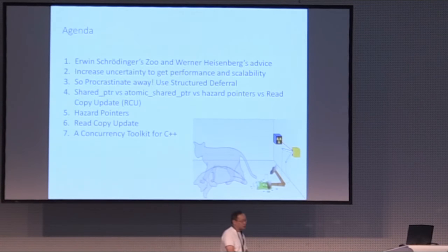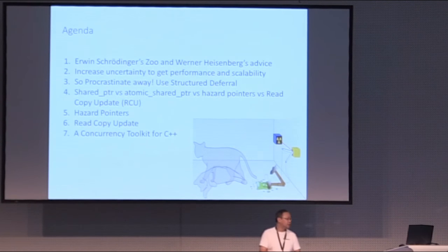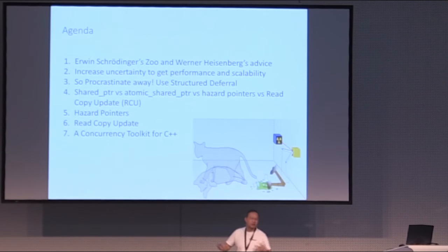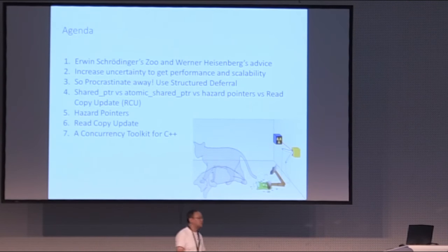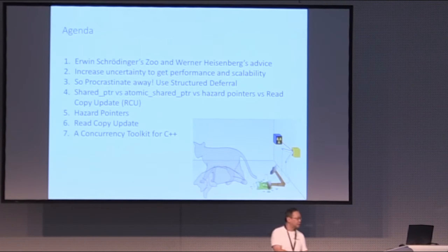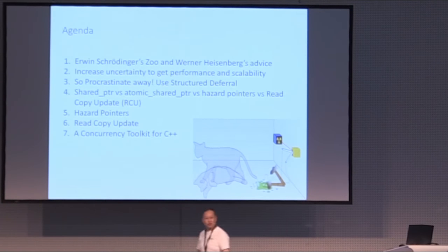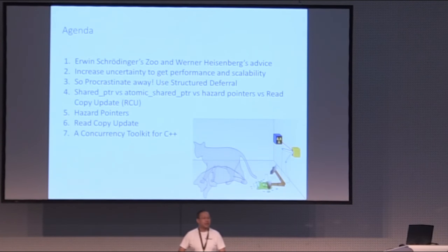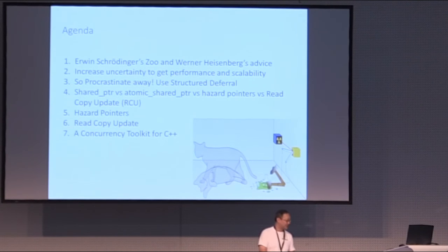Both of those don't hold much of a candle compared to what I'm going to show you that's coming next in concurrency TS2: hazard pointers and read-copy-update. These two actually have more similarity than differences. For a while, these were inventions locked by IBM, but that patent has essentially lapsed, and we can now put them in as a useful library that you can all use.